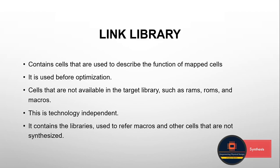A link library is basically a collection of cells that are used to describe the function of mapped cells. In RTL we have all the programming, and based on that we map them. All these mapped cells are already present in the link library. We use this library prior to the optimization stage — before optimization itself. This library is typically used to provide cells that are not available in the target library, such as RAMs, ROMs, memories, and other macros. Most importantly, link library is a technology-independent library — it contains cells from any technology library and is not dependent on any particular target-based technology.